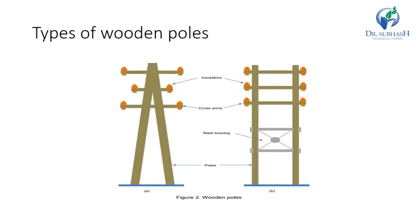Types of wooden poles: generally wooden poles have three types of structure. The first one is a single pole structure, A-type structure, and H-type structure. A single pole structure is used for low voltage and high voltage distribution lines. It is generally used for line voltage up to 100 kV and uses a maximum span length of about 50 meters. Cross arms are fitted on the pole over which the insulator is fitted.